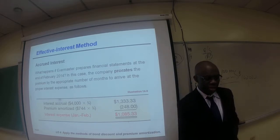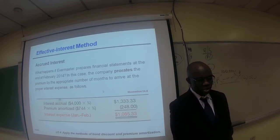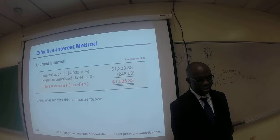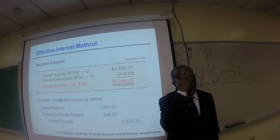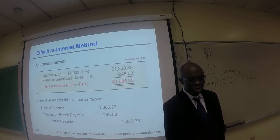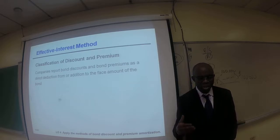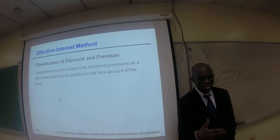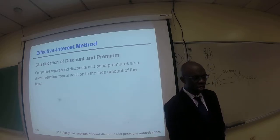Let's take a look at accrued interest. We discussed accrued interest before. In this case, we debit interest expense and credit premium on bonds payable and interest payable. The premium on bonds payable has to be in proportion to the period that is applicable. So regarding classification of discount or premium, we also talked about bond discount and bond premium as a direct deduction from or addition to the face value of the bond, which we demonstrated a few minutes ago.